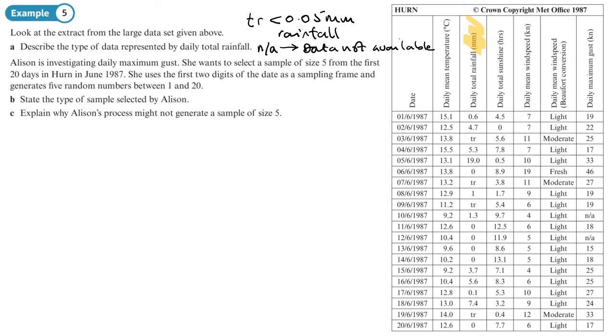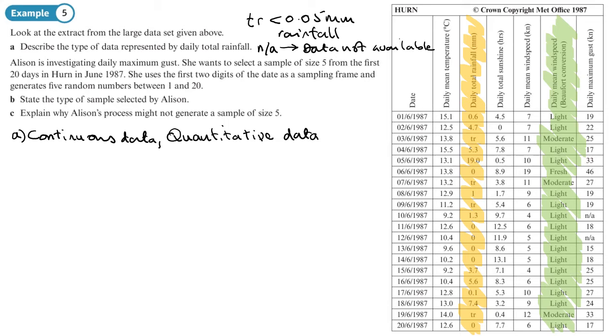Look at the type of data represented by the total daily rainfall. So the total daily rainfall is this column here. It's numerical data, and it's continuous as well, so you can say it's continuous data. And it's also data which is a quantity, so it's quantitative data as opposed to qualitative data, which you have when it's a description. So for example, this column here, the wind speed and it's a Beaufort conversion, so it's changed from a number to a wordy description, so that would be qualitative data when you've got a description.